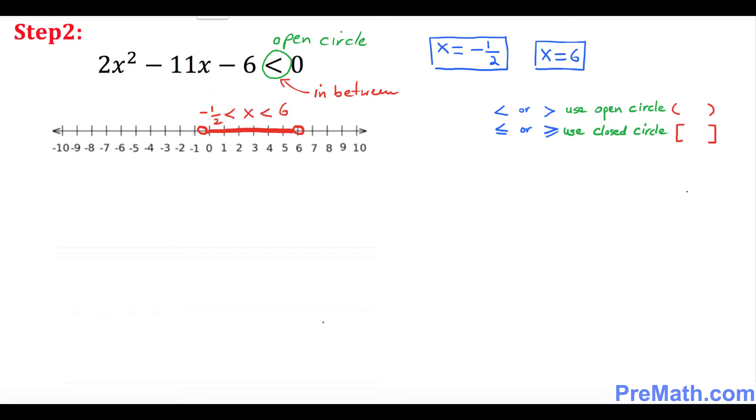So far so good. So essentially our solution is going to be the same one. So this is our graph by the way, we already did the last one, and our solution is going to be, once again I'm going to put it down over here. Since this is an open circle, so I'm going to put down -1/2 on this side and over here is going to be 6 and that is our solution.